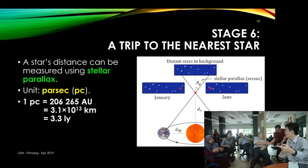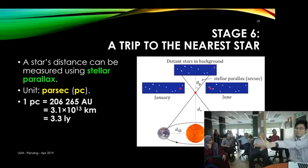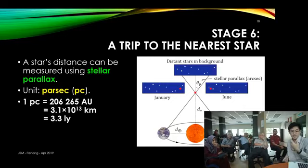How stellar parallax works: if you take up your thumb and look at it with your two eyes compared to a very far background, closing one eye then the other, you'll notice your thumb appears to cover two different things. This is a geometrical, trigonometric method to measure distances to stars. We take a baseline: when Earth is on one side of the Sun, we measure the position of a star with respect to a distant background. Six months later, when Earth is on the other side, we look at the same star again. With these two positions, we get an angle, and from that angle we can measure the distance from the Sun to that star.